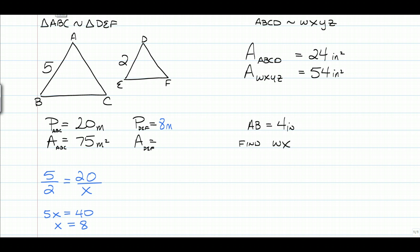But now to find the area, remember we have to use the adjustment. So we have the ratio of sides is 5 over 2, but since we're talking area, they're squared. So that's going to give us 25 fourths is equal to 75 over x. So when you're looking for area, you need to use the side ratio squared.